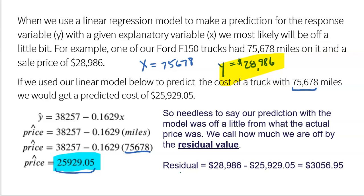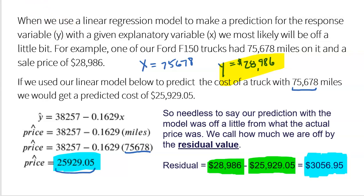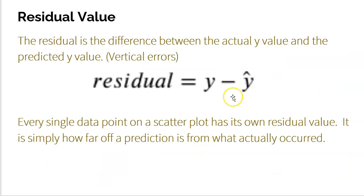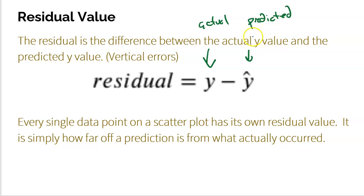The difference of how much we were off by is called a residual. The residual is the difference between the actual price of the truck and what our model predicted for that truck. I took the actual price, $28,986, subtracted my predicted price, and the difference is my residual value. A nice formula for a residual value is just your actual Y minus your predicted Y — no hat on the first Y. Order of subtraction matters very much, so the actual goes first. The easy way to remember that: actual begins with A, and A is the first letter of the alphabet.